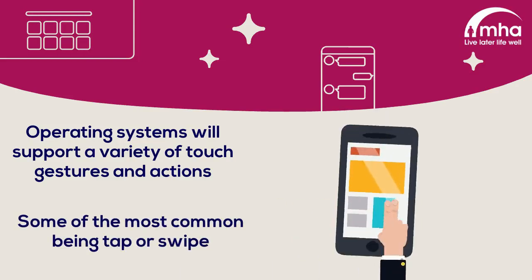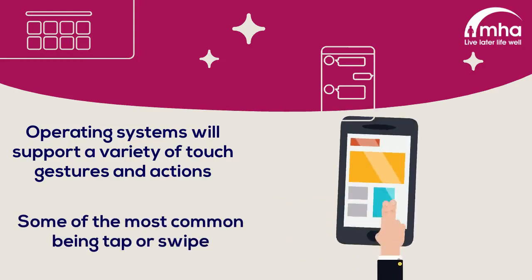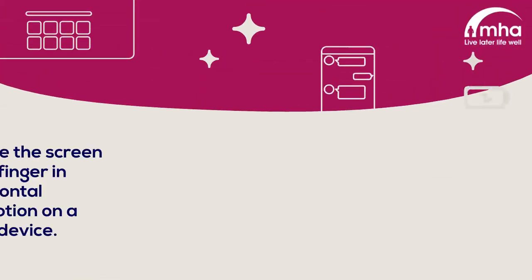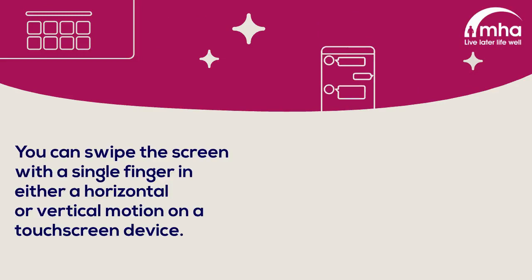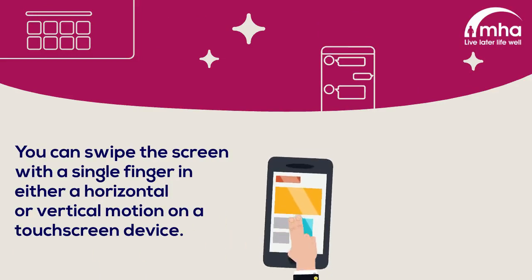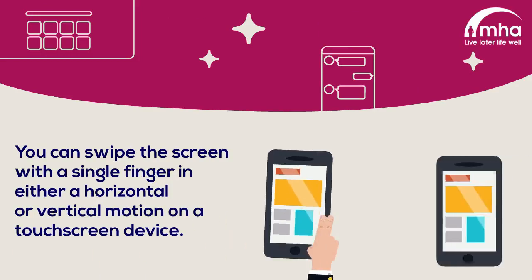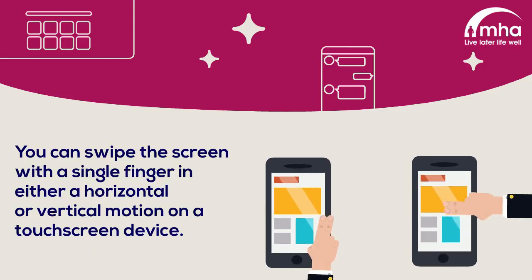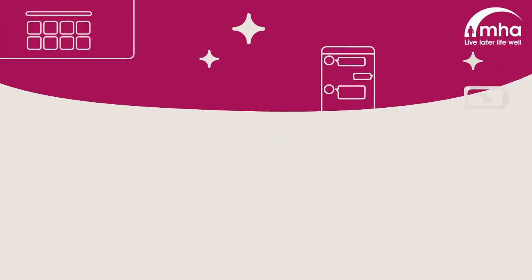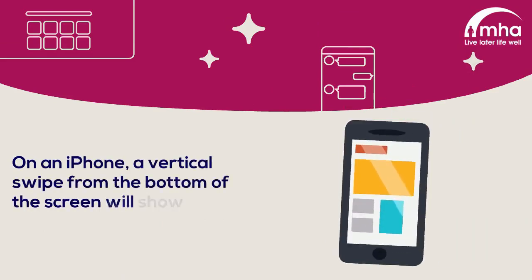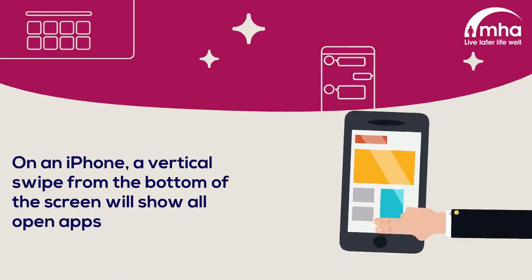Swiping normally involves taking a single finger and gently swiping in either a horizontal or vertical motion on the screen. For example, on an iPhone a vertical swipe up from the bottom of the screen will show all open apps or windows.